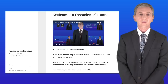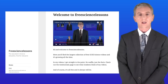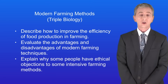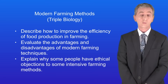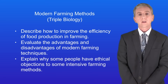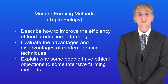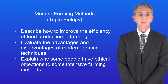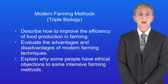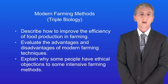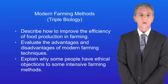Hi and welcome back to freesciencelessons.co.uk. By the end of this video you should be able to describe how to improve the efficiency of food production in farming. You should then be able to evaluate the advantages and disadvantages of modern farming techniques, and finally you should be able to explain why some people have ethical objections to some intensive farming methods. All of this is for triple biology students only.